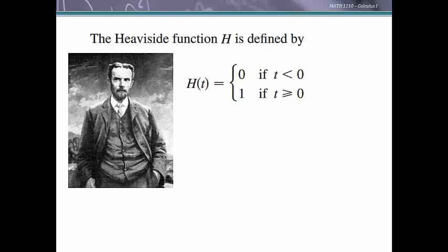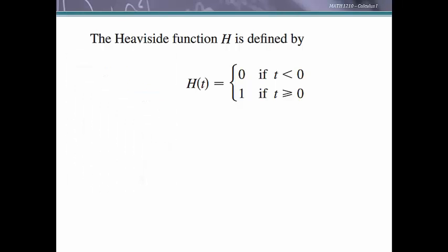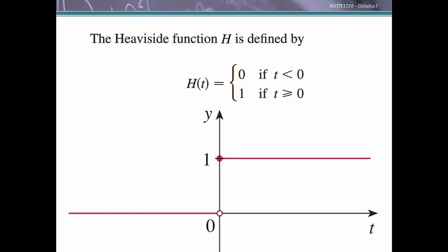Let's look and see what it tells us. We've got h of t is 0 if t is less than 0 and it's 1 if t is greater than or equal to 0. We could look at the graph of this and I look at this as a switch because basically at 0 you're going to flip a switch. If you're used to binary and 0s and 1s, think of the switch off 0 on 1.